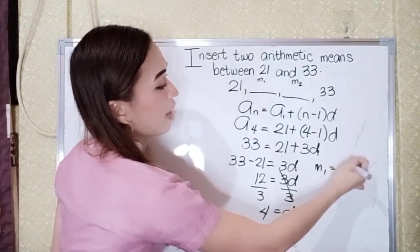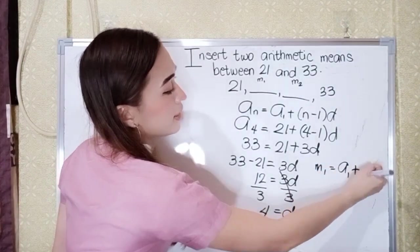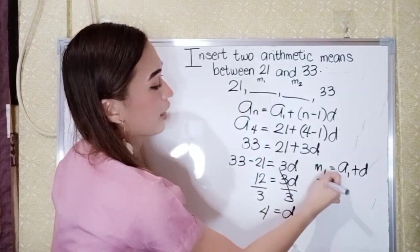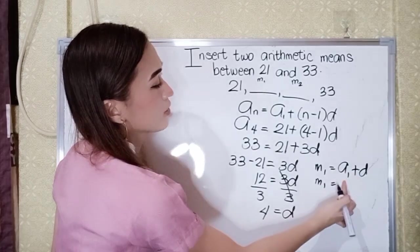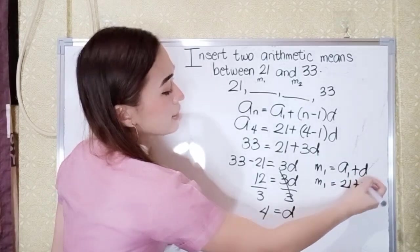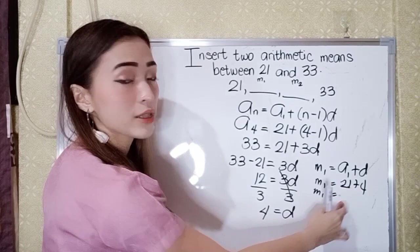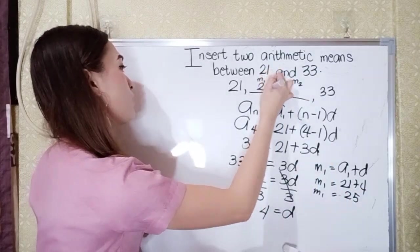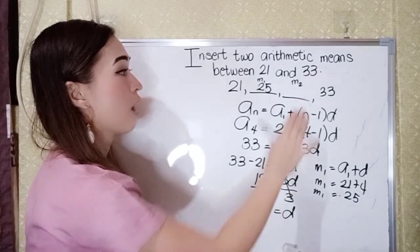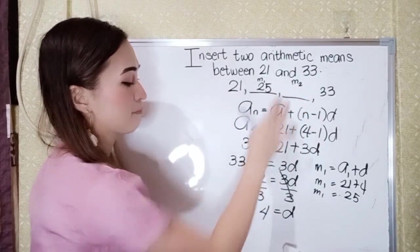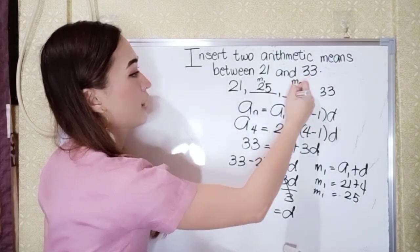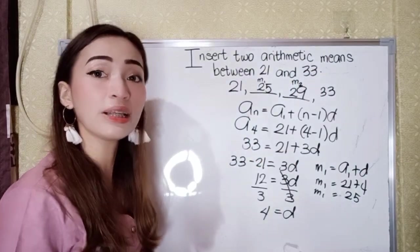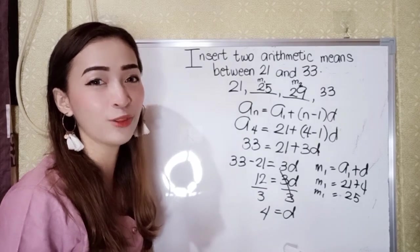Mean sub 1, A sub 1 plus the distance to get D mean sub 1. So that would become, A sub 1 is 21 plus 4. So 21 plus 4 is 25. So our mean sub 1 is 25. So our mean sub 2 is just 25 plus 4, that is 29. So our 2 arithmetic means between 21 and 33 is 25 and 29.